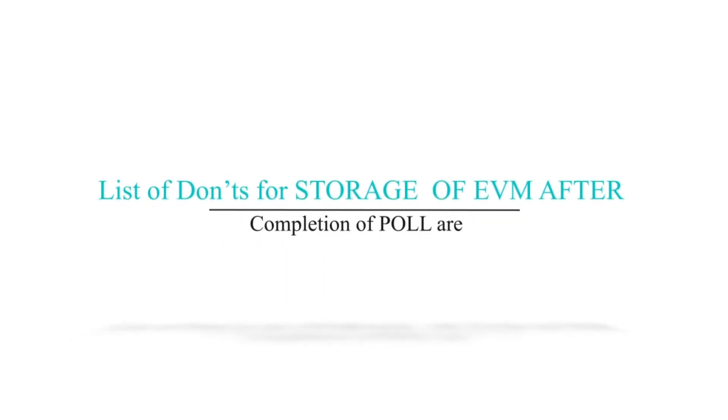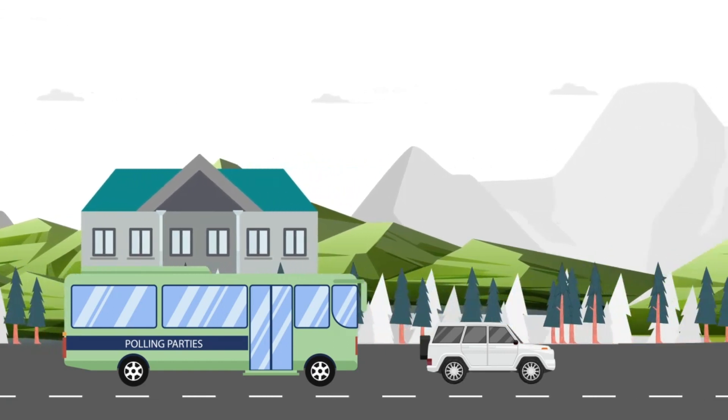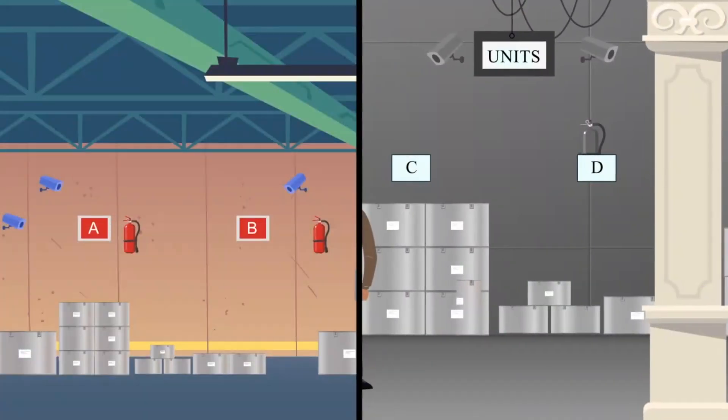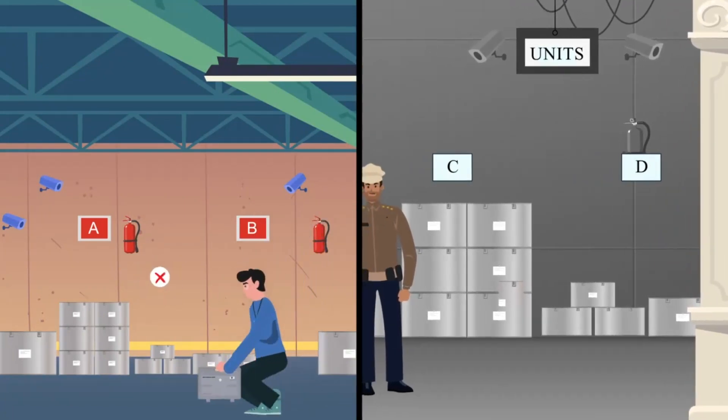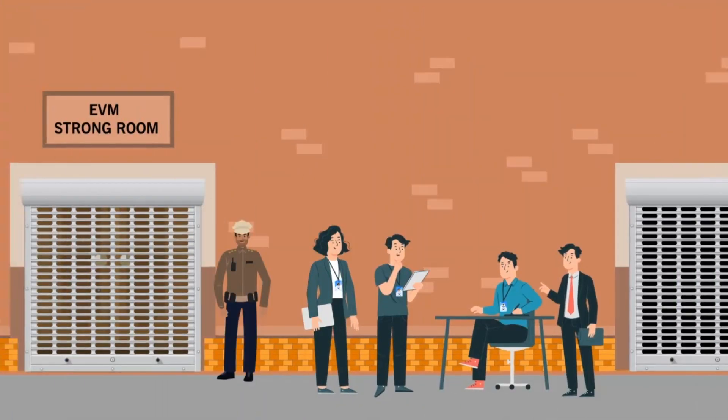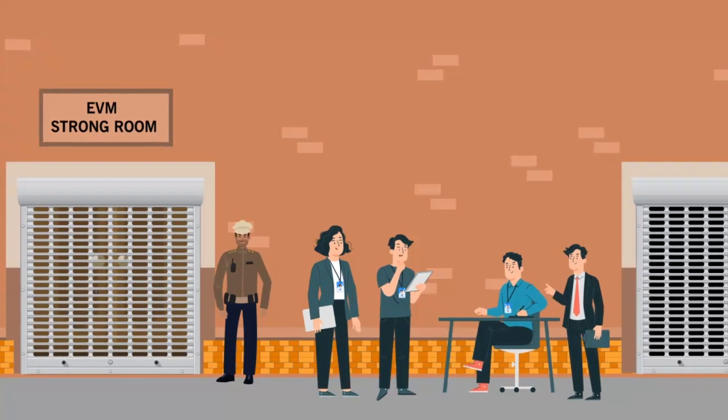List of don'ts for storage of EVM after completion of poll: Don't transport EVM and VVPAT in an unauthorized vehicle. Don't store C and D categories EVMs in the vicinity of A and B categories of EVMs. Don't forget to intimate all the contesting candidates about the storage place of categories A, B, C, and D.